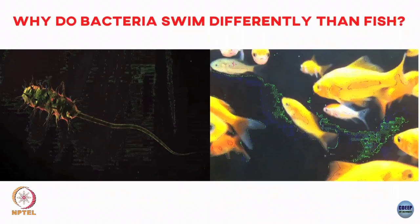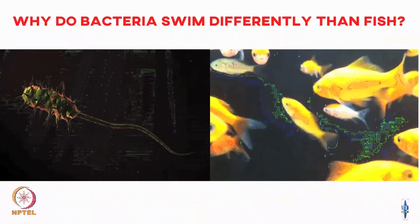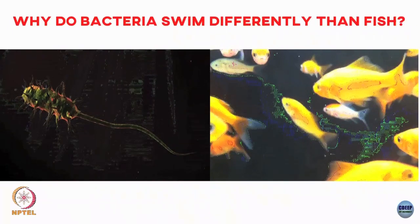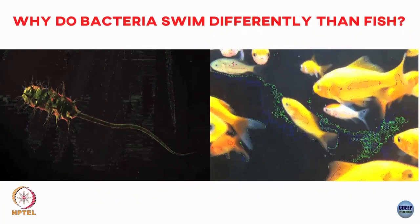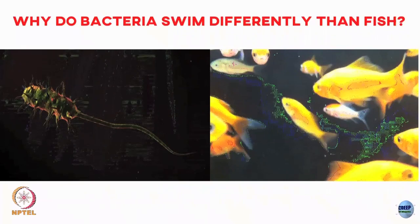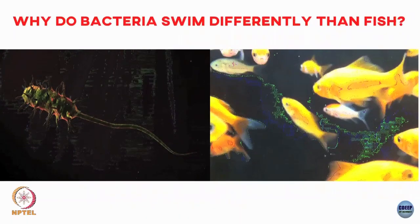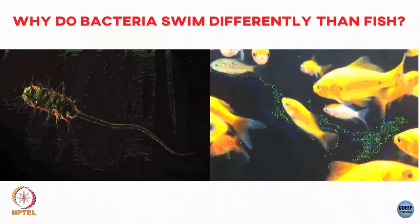The underlying idea is how do fluid flows — how do these fluid environments or backgrounds — differ depending on the biological scale. For example, a bacteria which swims in water versus a fish which swims in water: the strategies that it uses to propel itself will be very different. If you write down the equations of motion for the fluid, you will see that the terms which are important will be very different depending on whether it is a bacteria or a fish. The relative importance of the different terms varies, and because of these differences, organisms at very different length scales — microns versus centimeters or meters — will have evolved very different strategies to transport themselves.